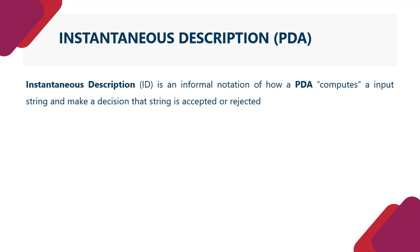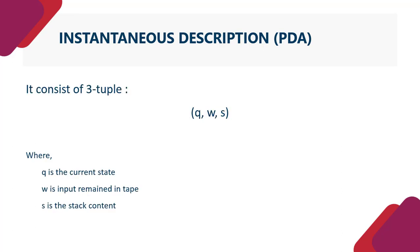So what is instantaneous description? Instantaneous description is an informal notation of how a PDA computes an input string and makes a decision that the string is accepted or rejected. It consists of three tuple Q, W and S, where Q is the current state, W is the input remaining in tape, and S is the stack content.